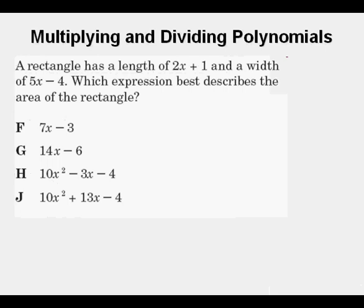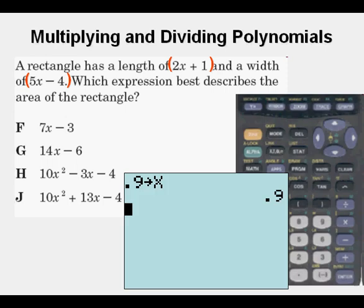Now we have an expression where we have a length and width of a rectangle, and those are both in binomial form. Now notice that the test writer did not put those two binomials in parentheses. So on your test paper, you can do that. Just mentally remind yourself that needs to be done. And so we're going to enter that area in our calculator. Again, we're going to store a value for X. I chose 0.9. You can use a different value.